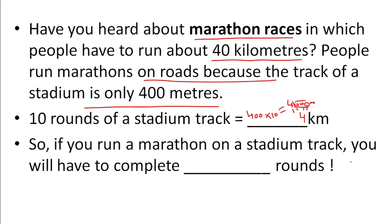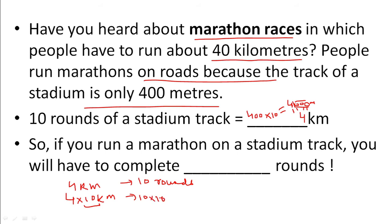For 4 kilometers there are 10 rounds. We need to run 40 kilometers for a marathon — that is 10 times more distance. So the rounds also increase 10 times: 10 into 10 equals 100 rounds. So 40 kilometers equals 100 rounds of a stadium.